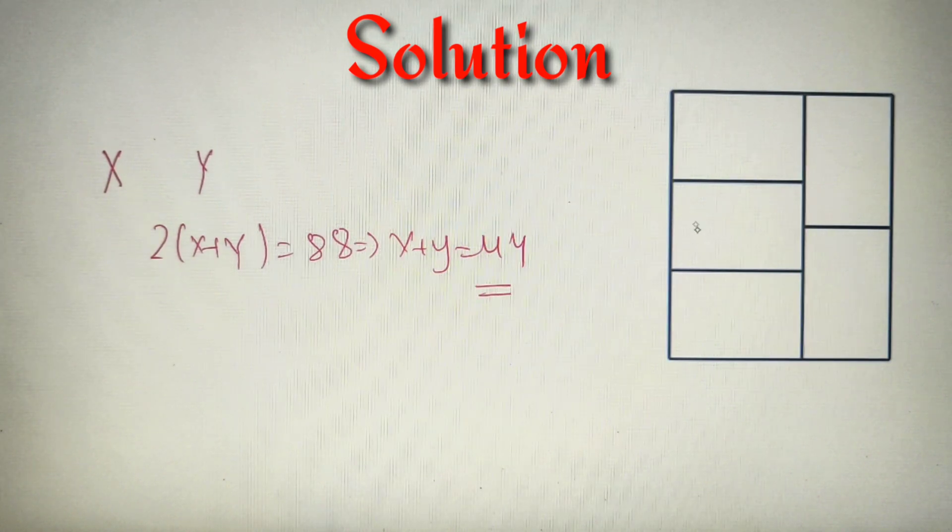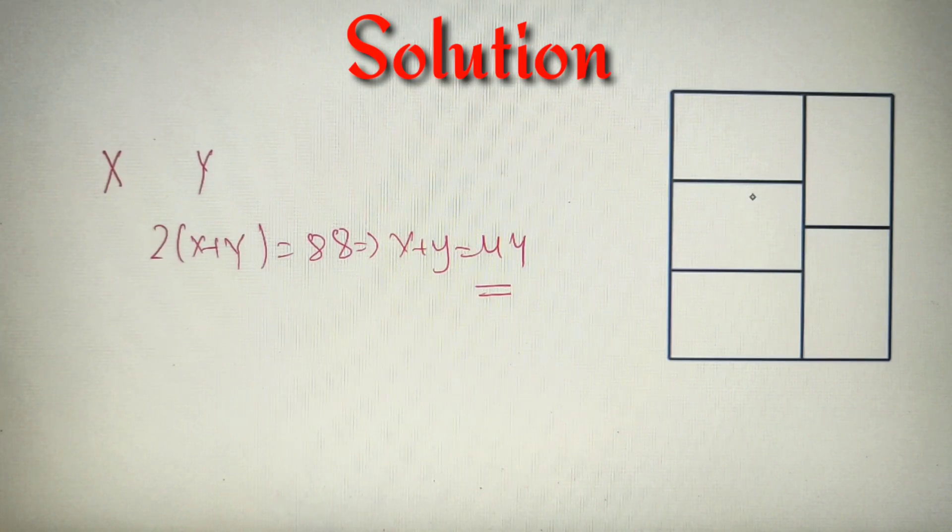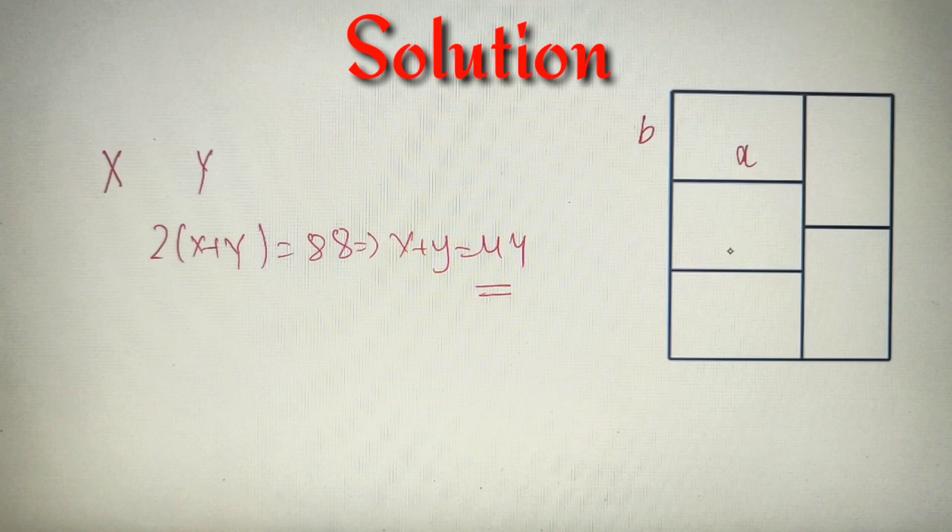Now according to our given question, these figures are congruent to each other. When we say two figures are congruent, we mean that they are same in all respects. So if I take the length of the small rectangle as A and the breadth as B, then all the figures will have the same dimensions.